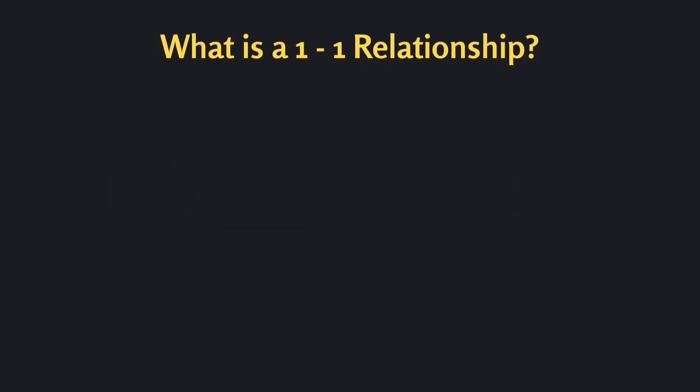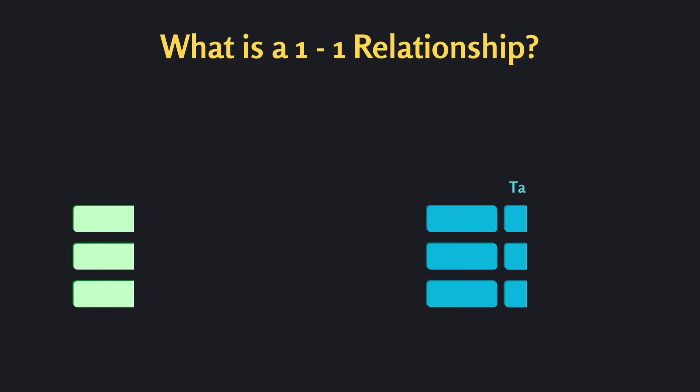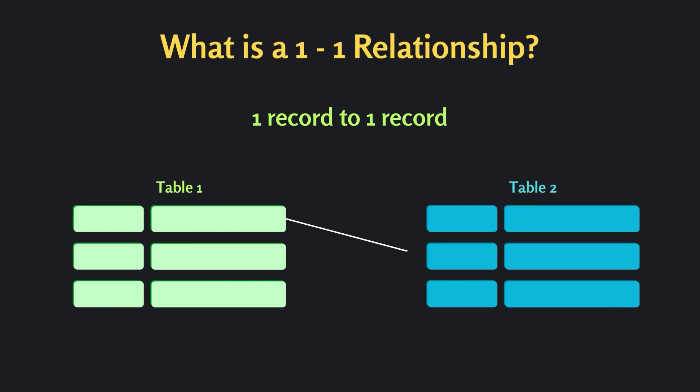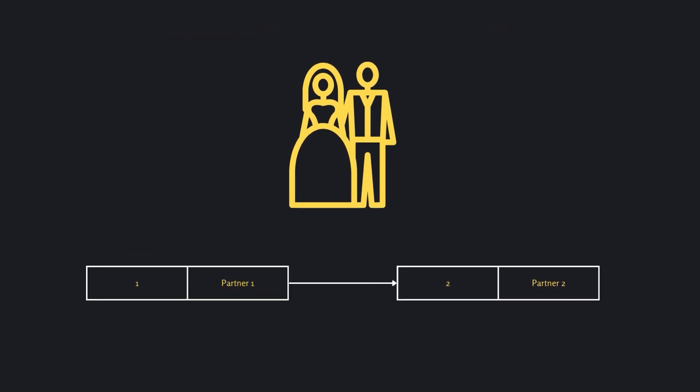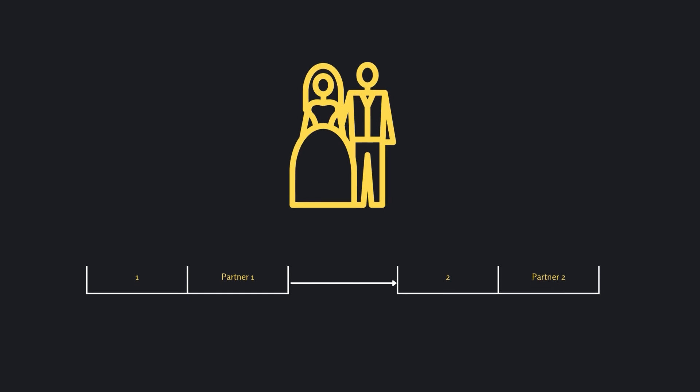First, let's understand what a one-to-one relationship is in the context of databases. In a one-to-one relationship, a record in one table is linked to only one record in another table. You can think of it like a marriage between two people, but instead of people we have tables, where each record is paired with exactly one record in the other table.